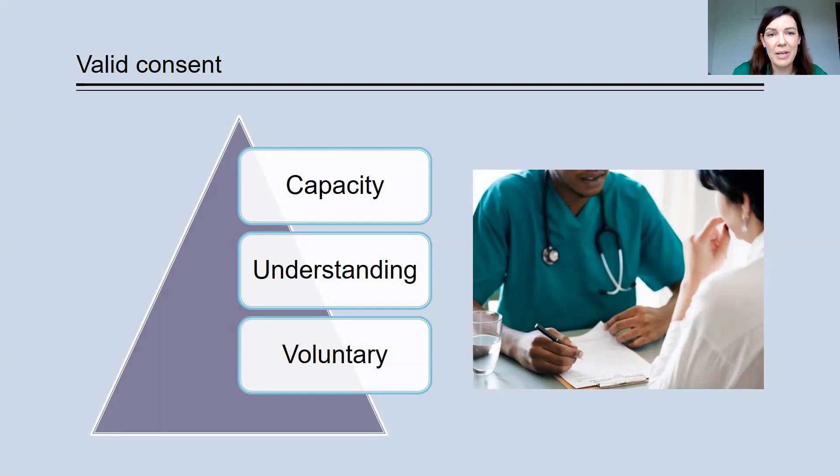The next requirement is that the participant has adequate understanding. Now, in some regulations, you might see this described as disclosure. Disclosure refers to the obligation on the researcher to explain relevant material about the research, but disclosure alone isn't enough. So really, the focus is on the participant and whether the participant has adequate understanding of the nature of the research and the consequences.